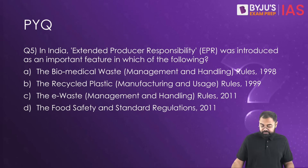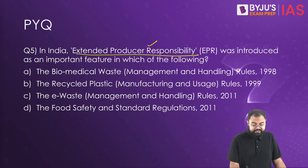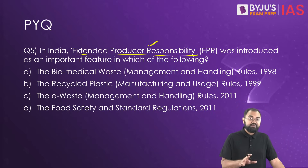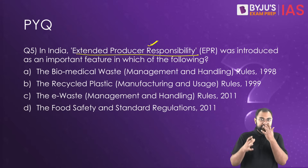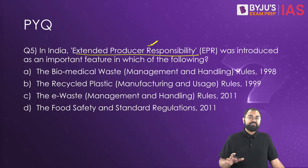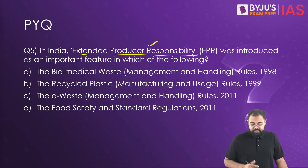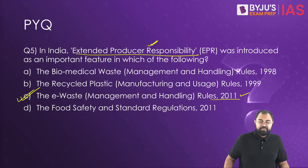Looking at a previous question: Extended Producer Responsibility was introduced as an important feature in which rules? Extended Producer Responsibility means it is the producer's or manufacturer's responsibility to manage all waste generated even after the product has been consumed. Waste management is not only the responsibility of municipalities but also of the producers and manufacturers. It was first introduced in the 2011 E-Waste Management Rules and amended in 2022 with new aspects added.